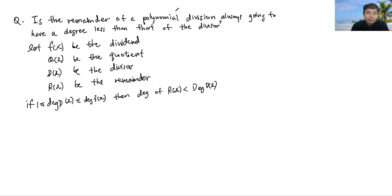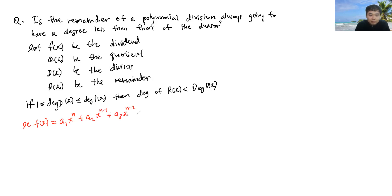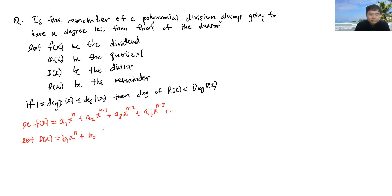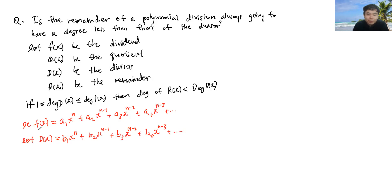Maybe we can start off with cases. So I'm going to let f(x) be a1·xⁿ + a2·xⁿ⁻¹ + a3·xⁿ⁻² + a4·xⁿ⁻³ and so on. And I'm going to let our divisor be b1·xⁿ + b2·xⁿ⁻¹ + b3·xⁿ⁻² — I can continue writing but that's not really necessary. So this is our d(x). In this case, this is the case where the degree of d(x) is equal to the degree of f(x).